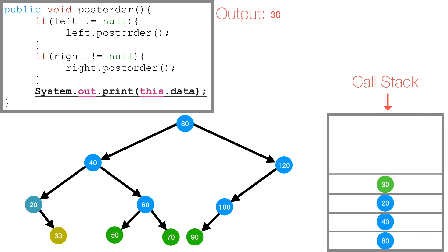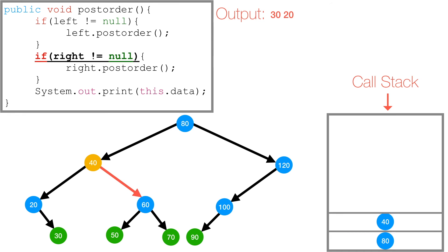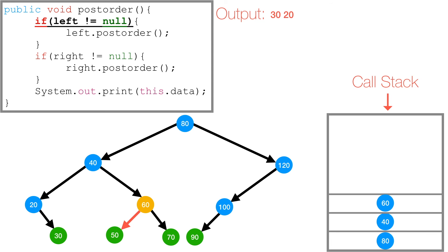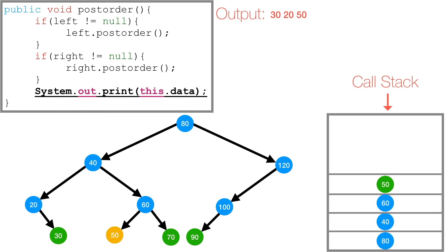Since we've explored 30's left and right subtrees, 30 is popped off the call stack and we're back at 20. We've explored 20's left and right subtrees, so we print 20 and 20 gets popped off the call stack as well. We're back at 40. We've explored 40's left subtree but not 40's right. So we call post-order on 40's right subtree, and 60 is pushed to the call stack. We check if 60's left is not null — it's not — so we call post-order on 60's left subtree. 50 gets pushed to the call stack. 50's left and right are both null, so we print 50 and 50 gets popped off the call stack.